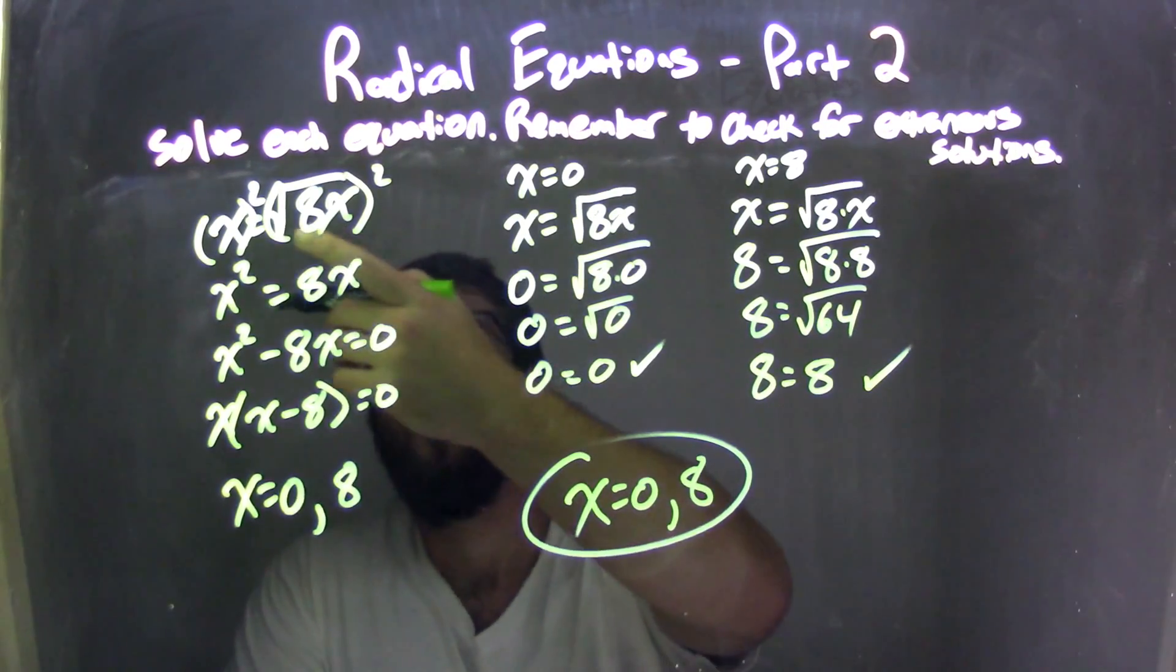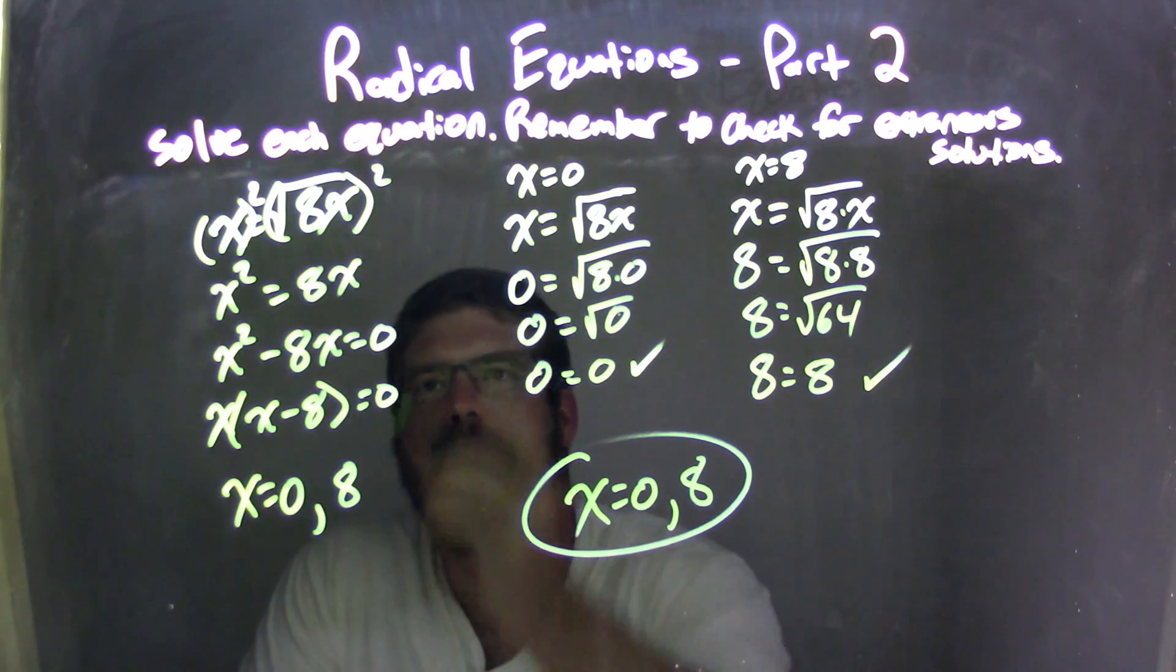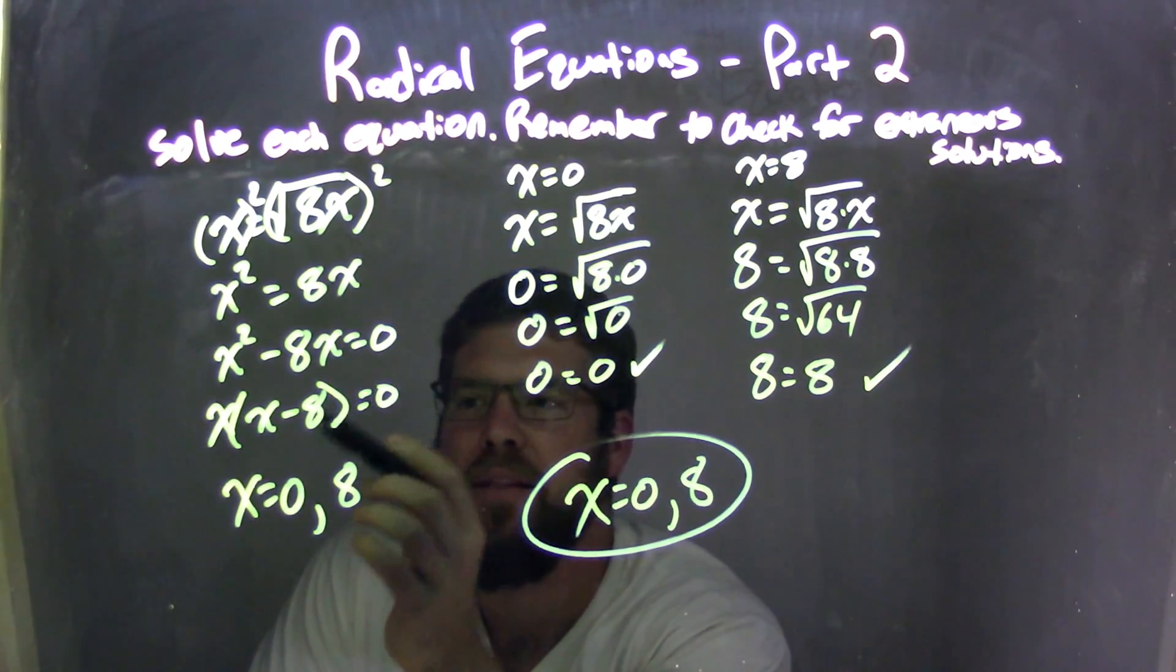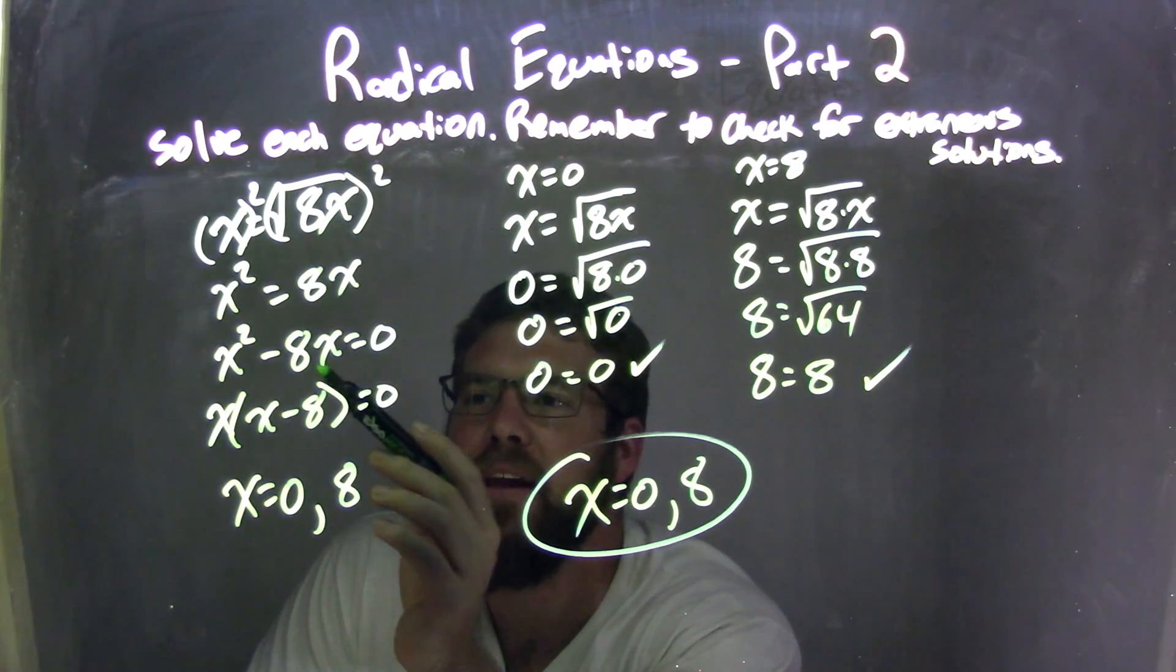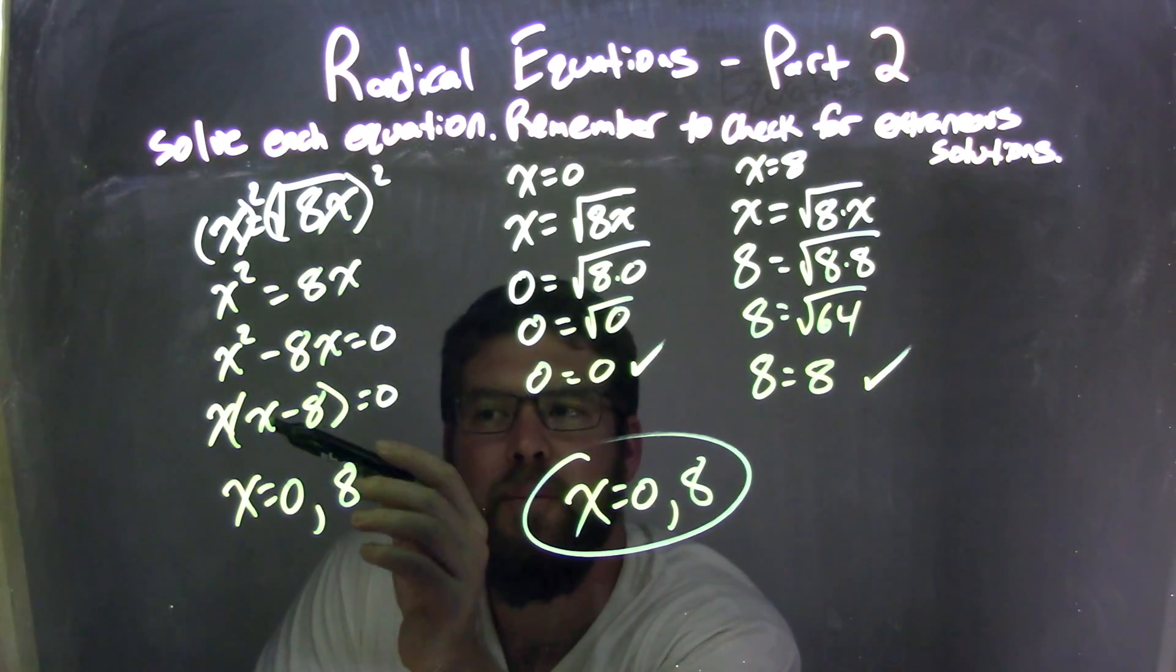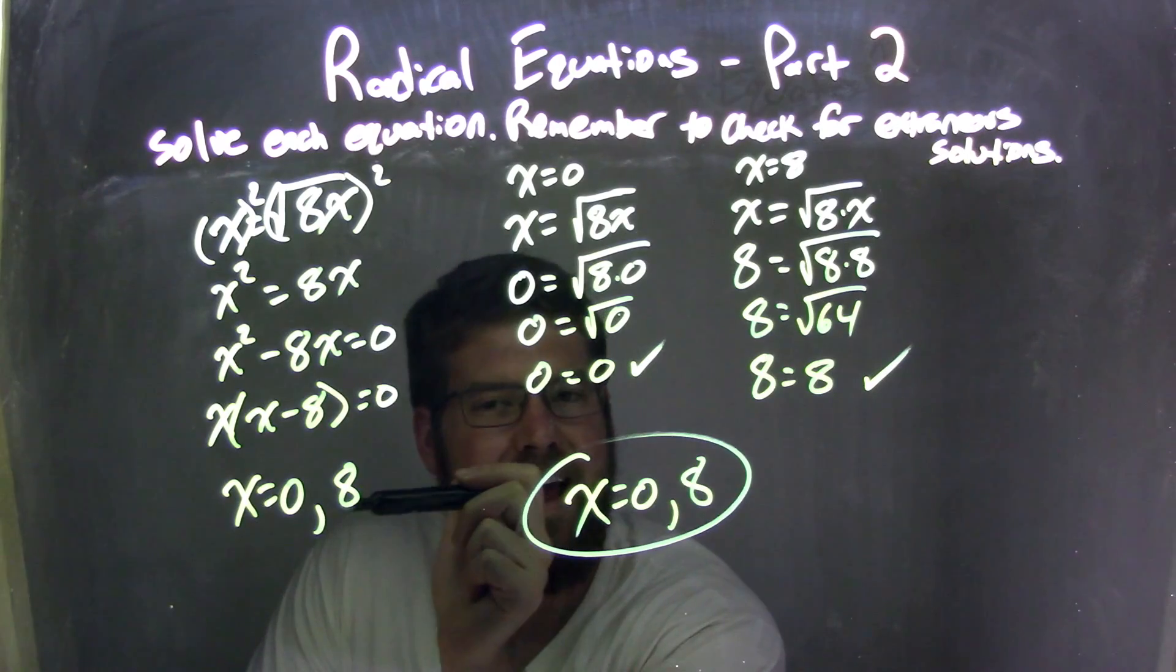So let's recap. We were given x equals the square root of 8x, and we squared both sides to get rid of the radical. Then I subtracted 8x and brought it to the left, and left it with x squared minus 8x equals 0. Then I factored that to get x times x minus 8, and then I knew that from there, setting each one equal to 0, my two solutions are x equals 0 and x equals 8.